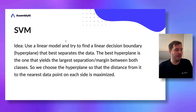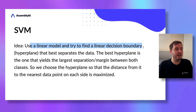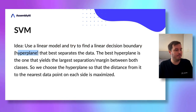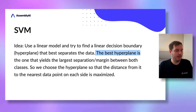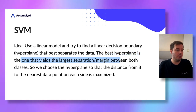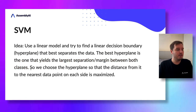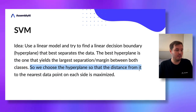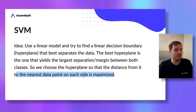The idea behind SVM is to use a linear model and try to find a linear decision boundary, also called a hyperplane, that best separates the data. The best hyperplane is the one that yields the largest separation or margin between both classes. We choose the hyperplane so that the distance from it to the nearest data point on each side is maximized.